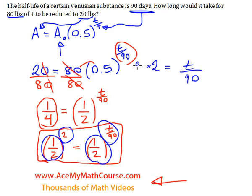Then I can just multiply both sides by 90. Those cancel out. And t is going to be equal to 90 times 2, 180.